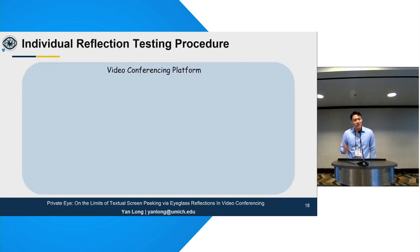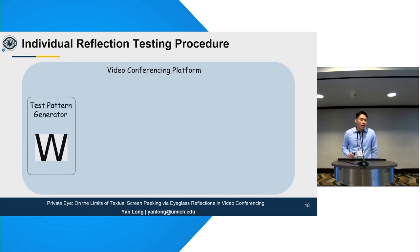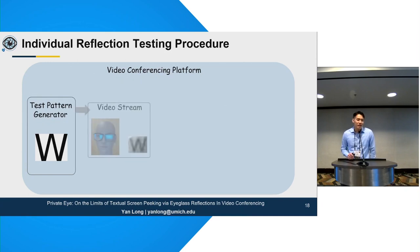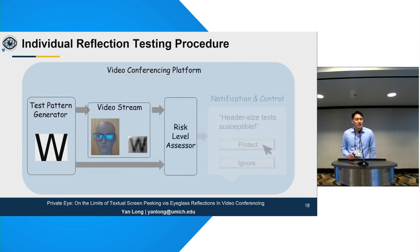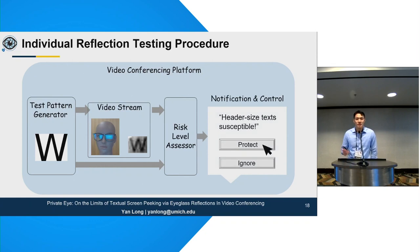We proposed an individual reflection testing procedure that could potentially be provided by service providers like Zoom, which could be initiated by the user at the beginning of each session. Basically, the platform generates test patterns like text, captures the video, gets the reflections, and compares them with the test pattern. Using a similar methodology as in our paper, you can do risk assessment and notify the user of possible information leakage. If it detects header-sized text is susceptible, it could let users decide whether to ignore the threat or protect themselves.